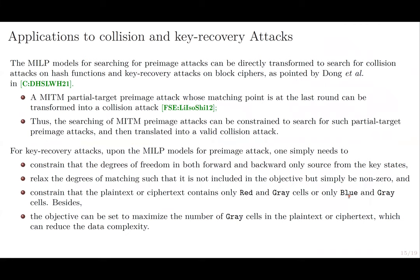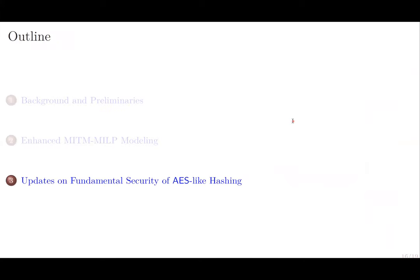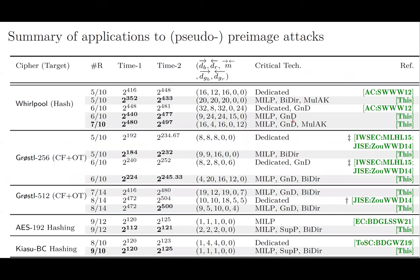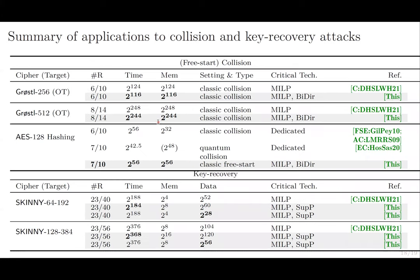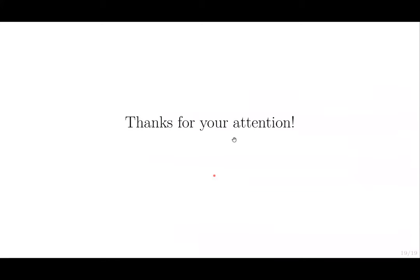The MILP models for searching for pre-image resistance attacks can be directly transformed to search for collision attacks on hash functions and key recovery attacks on block ciphers. With the enhanced Meet-in-the-Middle MILP modeling, we obtain many updates on the fundamental security of AES-like hash functions and block ciphers, including the first pre-image attack on seven-round Whirlpool, and improved pre-image and collision attacks on Grøstl and AES hashing modes, and improved key recovery attacks on the tweakable block cipher Skinny. Thanks for your attention.